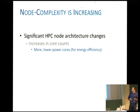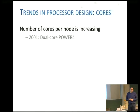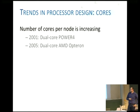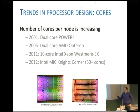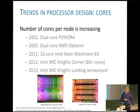Node complexity is also increasing. We have large changes happening in HPC nodes — large numbers of threads with Xeon Phi, for example, and cache-coherent NUMA. As computer architects, we've seen the number of cores per node increasing. Back in 2001 was the first dual-core processor with the Power4 from IBM, and the first x86 dual-core was in 2005 from AMD. Fast-forward to 2011, we saw 10-core processors. Now we have 60-plus cores with Knight's Corner, and Intel recently announced the Knight's Landing processor.